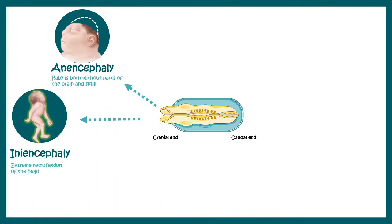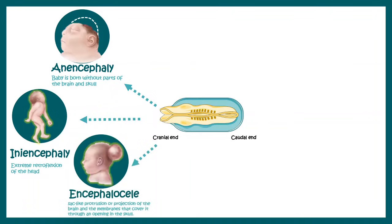There is also iniencephaly, which means extreme retroflexion of the head — the head is bent backwards. Babies born with this defect might survive for a few years, but survival chances are very low. Then there is encephalocele, which is a sac-like protrusion projecting out of the brain of the newborn, covered by a membranous layer — though in some extreme cases the cover may be absent. These are the defects that occur when the cranial end fails to fuse.